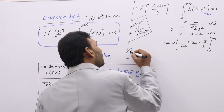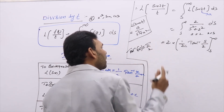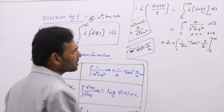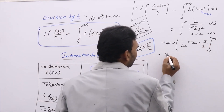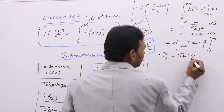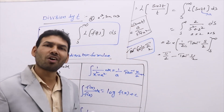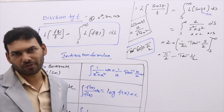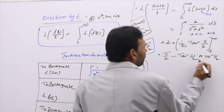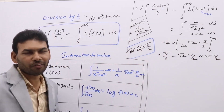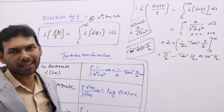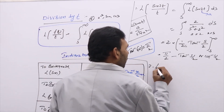We know that tan⁻¹(∞) = π/2, because tan(90°) = ∞. So substituting the limits: we get π/2 minus tan⁻¹(s/2). This is the answer, or equivalently cot⁻¹(s/2). Whenever solving L{sin(2t)/t}, you need to keep in mind that tan⁻¹(∞) = π/2.